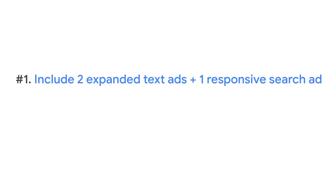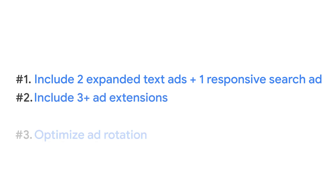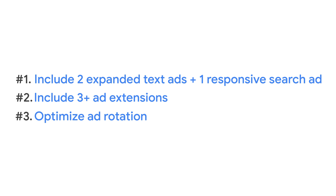And that's it for creative excellence. To recap, the three steps to achieve creative excellence on search are: including two expanded text ads and one responsive search ad, including three or more ad extensions, and optimizing your ad rotation.